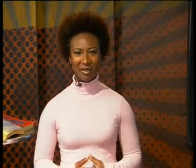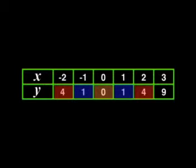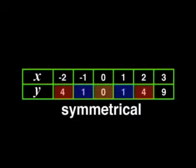But this wasn't the only pattern in the table. Can you find another pattern? If you only look at the y values, 0 has got a 1 on each side of it. Then the next column on each side has a 4 in it. In this case, we say the y values are symmetrical around 0.